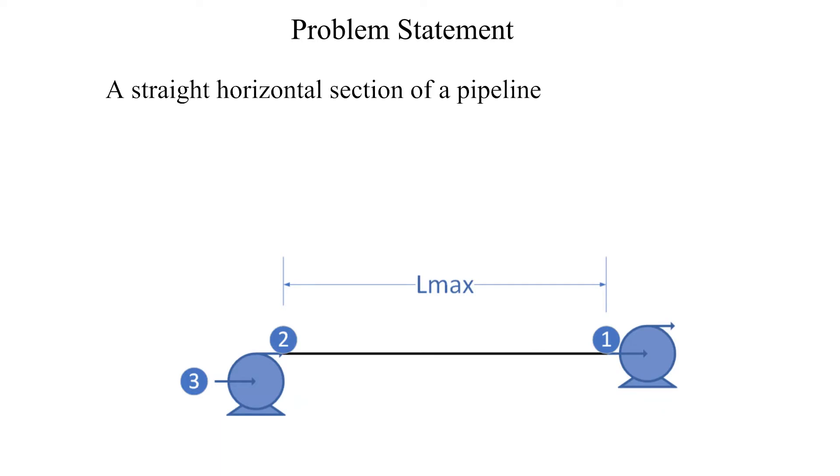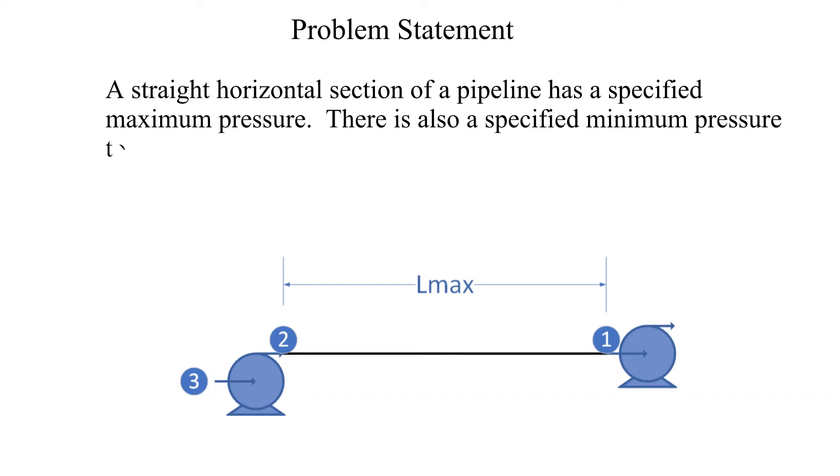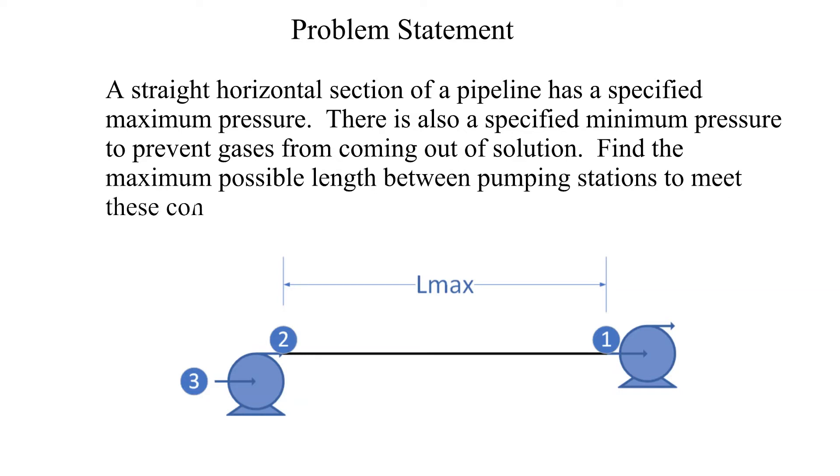Here is the problem statement. Key things to note is that it is a horizontal straight section of pipe between the pumps. We will not be accounting for elevation changes in losses due to valves or other fittings. A maximum steady state pressure will be specified and a minimum pressure to prevent gases from coming out of the solution.